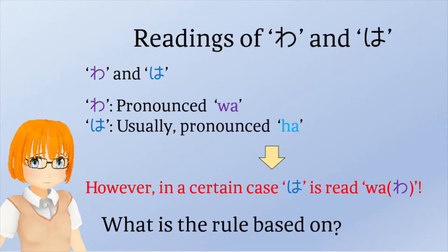These two letters shown on this page have different readings respectively. The letter written in purple is pronounced wa. The letter painted blue has a reading ha. However, in a certain case, ha is read wa. What is the rule based on?